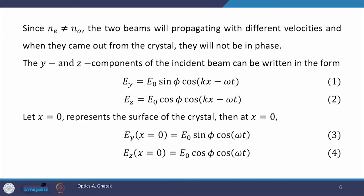Since N_O ≠ N_E, the two beams will come out of the crystal with different phases. The y and z components of the incident beam are written as equations 1 and 2: the y component is E₀ sin φ · cos(kx − ωt) and the z component is E₀ cos φ · cos(kx − ωt). At the first surface of the crystal, we set x = 0, giving equations 3 and 4.